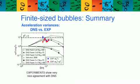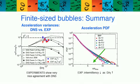To summarize, for finite size bubbles, the variances of both the horizontal and vertical components are about five times the variance of tracers. The intermittency of the horizontal component goes down as size ratio increases.